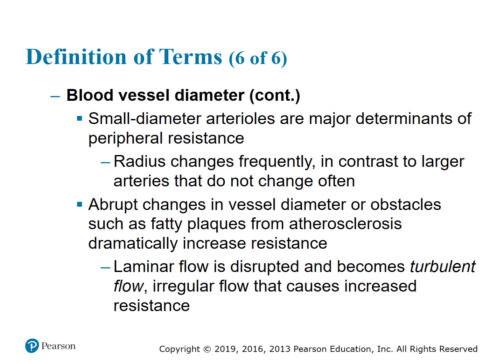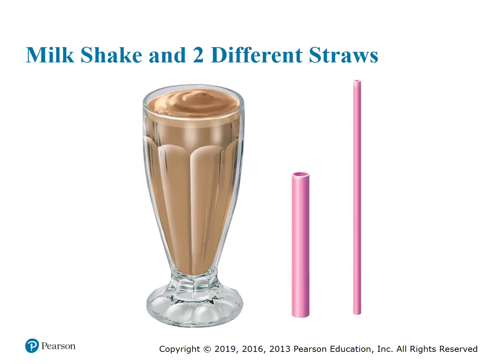Small-diameter arterioles are the major determinants of peripheral resistance because the radius changes frequently, in contrast to larger arteries. Abrupt changes in vessel diameter or obstacles such as fatty plaques from atherosclerosis dramatically increase resistance. Laminar flow is disrupted and becomes turbulent flow, which is irregular flow that causes increased resistance. This concept can be demonstrated with a milkshake and two straws of differing diameter and length — the wider, shorter straw allows a higher flow rate.